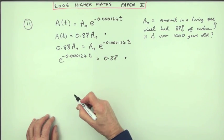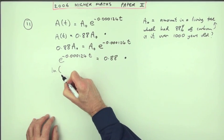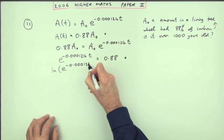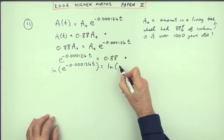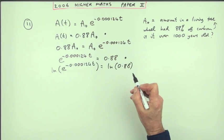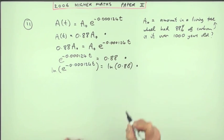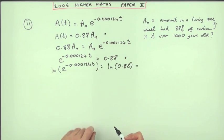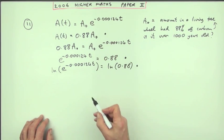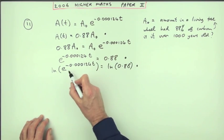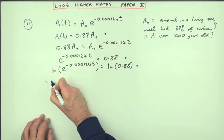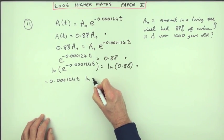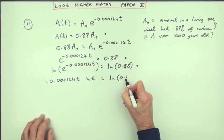If you wanted to be tedious you could say I'll do ln of both sides. So ln of e to the negative 0.000124t equals ln of 0.88. Taking the log of both sides gets you a mark. But there's no point saying that's the inverse. If I'm going through this particular route I'd have to say the power can pop out of the logarithm. Negative 0.000124t ln of e equals ln of 0.88.